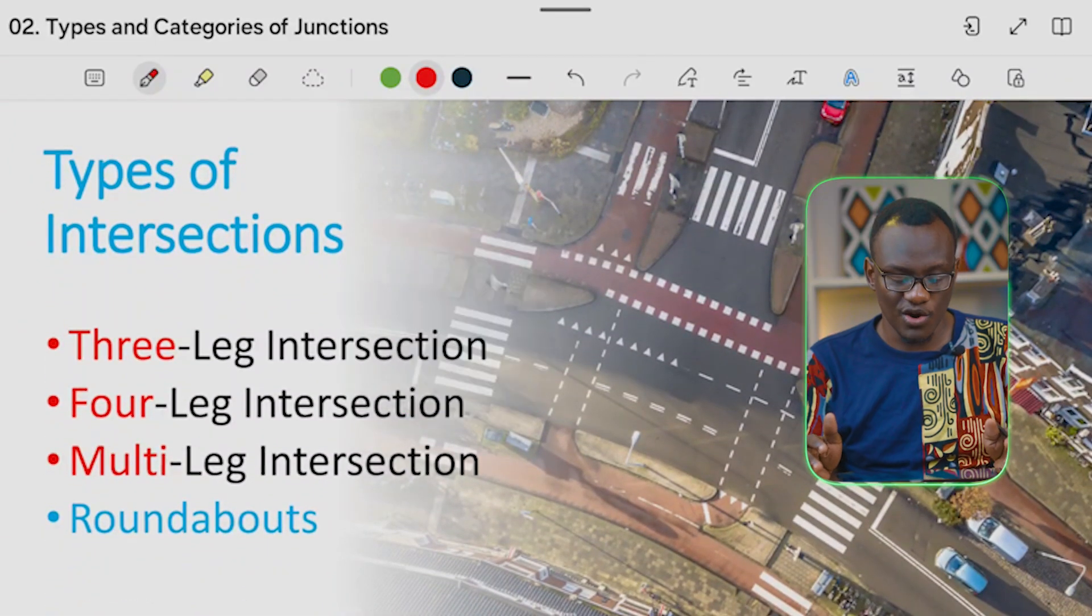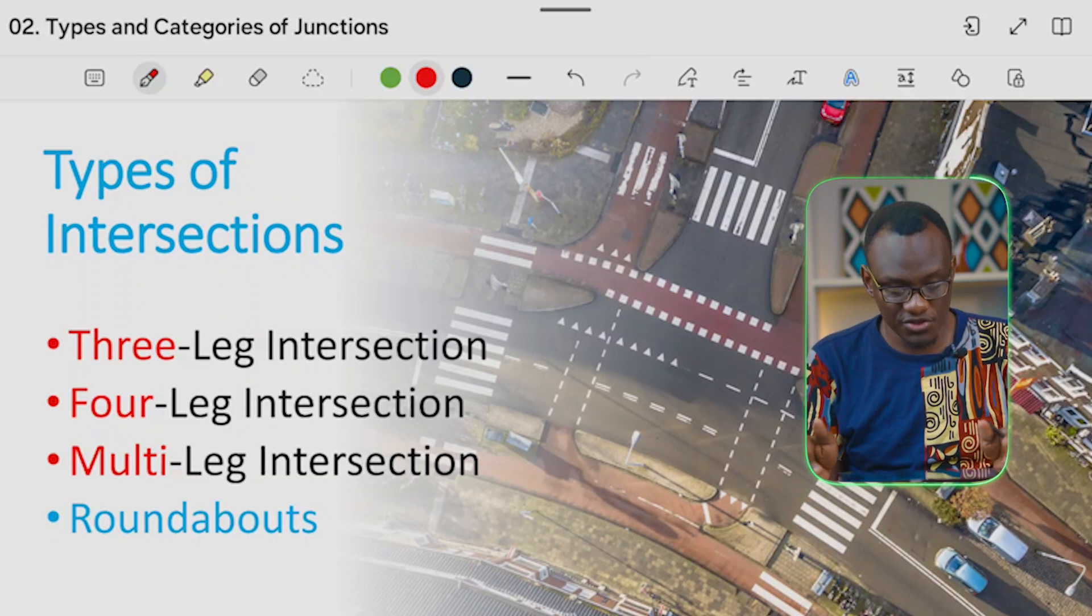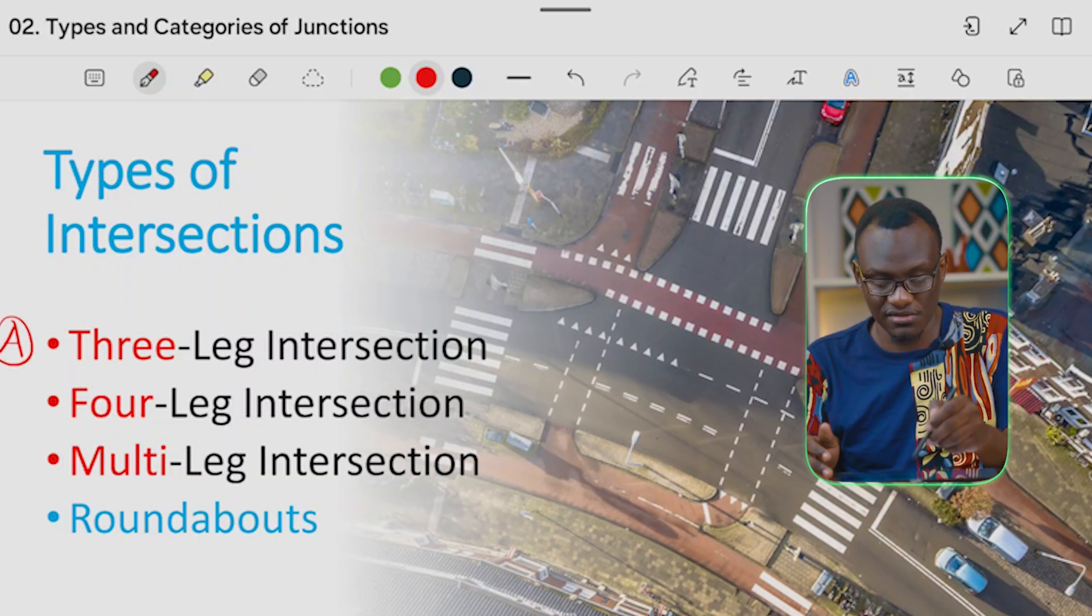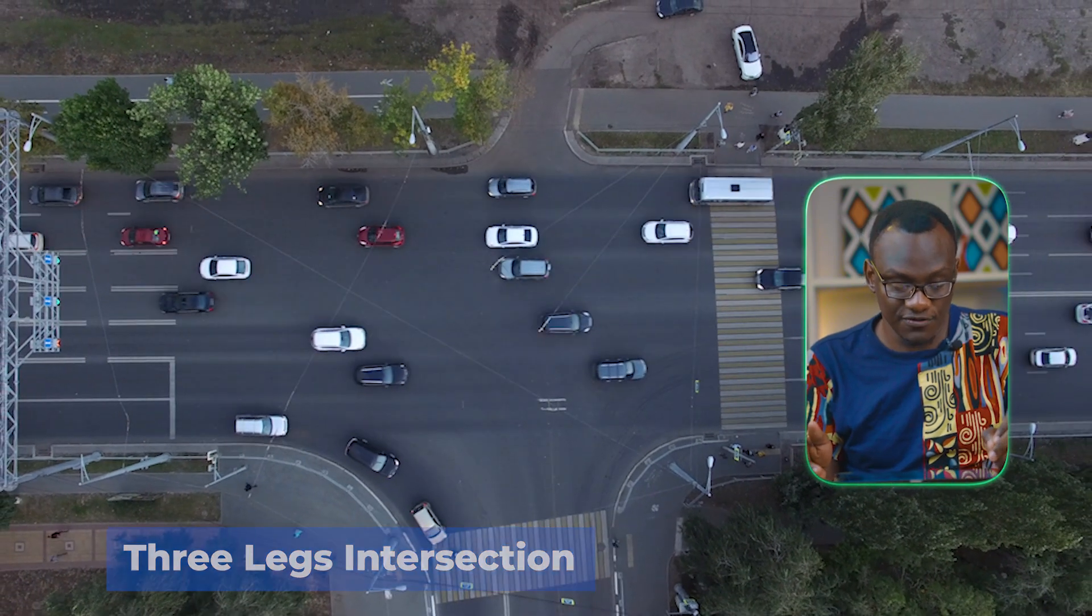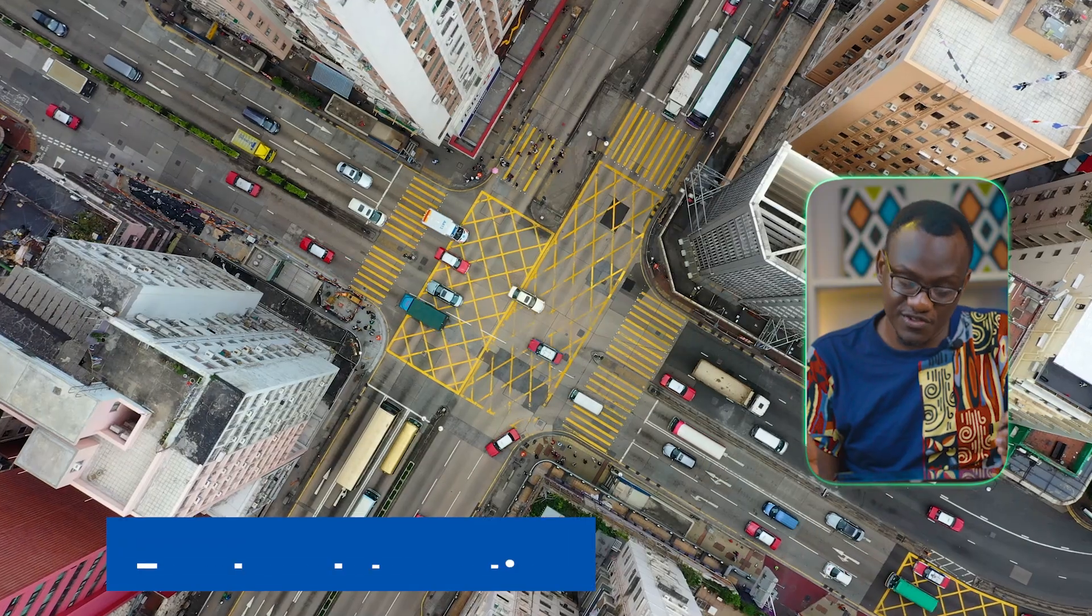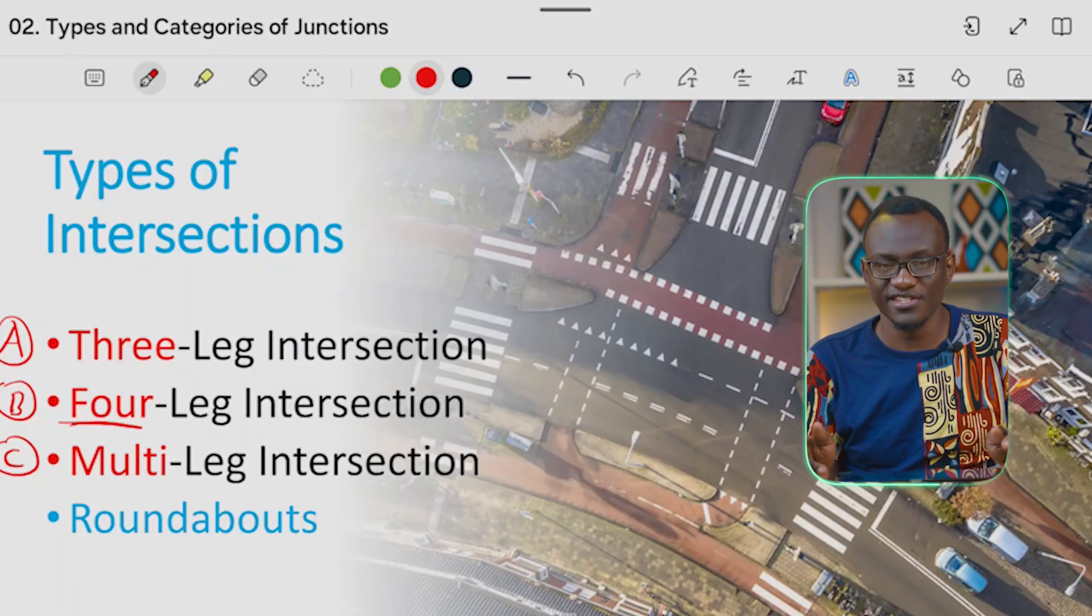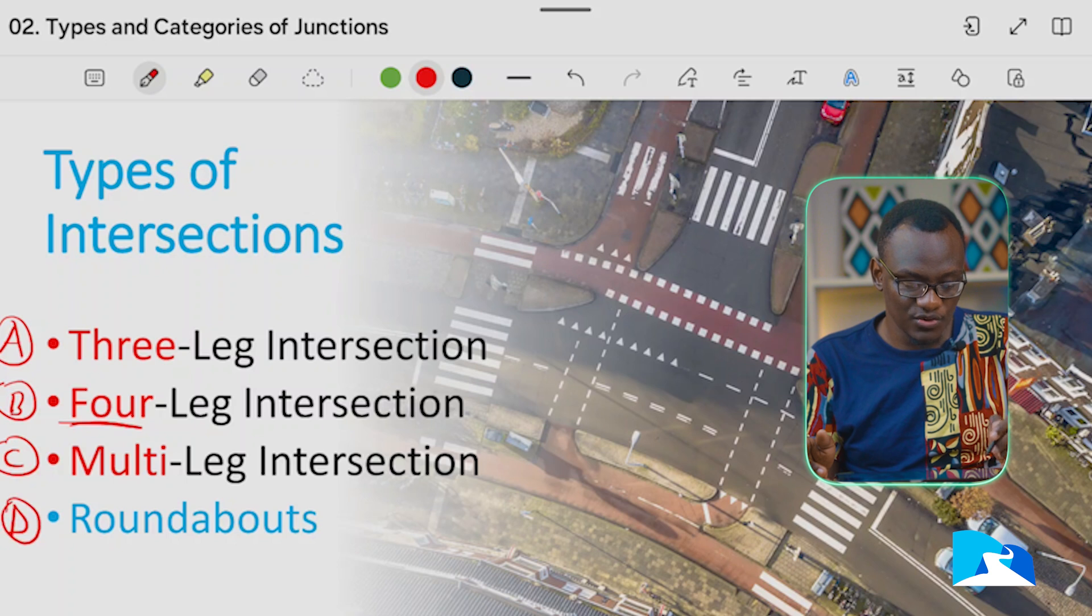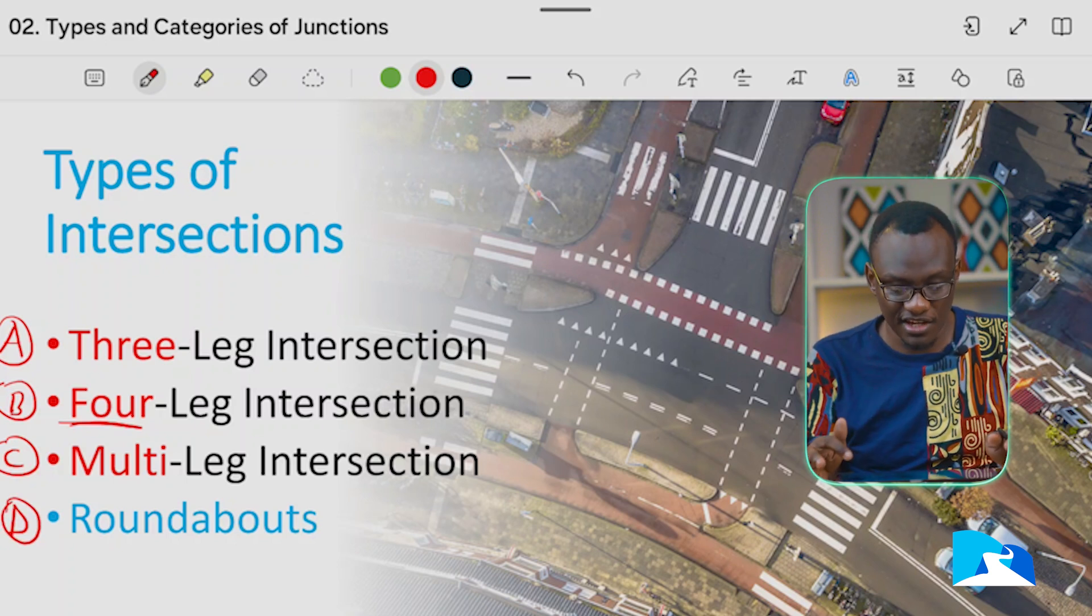Now when we look at the types of intersections, one as you always know, we have the first one which is a three-leg intersection. So as you see in the image here we have three legs. There's the four-leg which is four legs. Then we have the multi-leg, a multitude of arms, so junctions which are more than four arms. And then finally we have the roundabouts, which are a form of junction but with circulation.